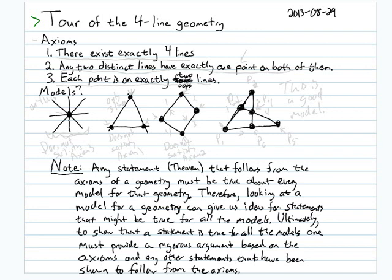The four-line geometry has three axioms. The first axiom says that there exists exactly four lines in the geometry. The second says that any two distinct lines have exactly one point that's on both of them. And the third axiom says that each point is on exactly two lines.